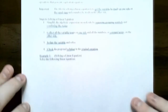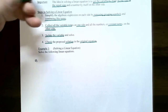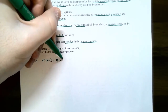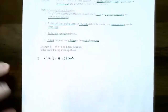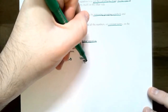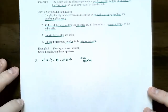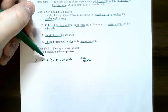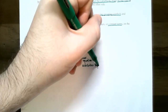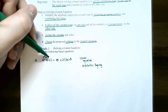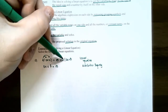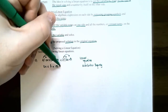Let's use these four steps on example one: solve the equation 4 times the quantity 2x plus 1 equals 29 plus 3 times the quantity 2x minus 5. Each variable is raised to the first power, so this is a linear equation. Step one — remove grouping symbols using the distributive property. Distribute the 4: four times 2x is 8x, four times 1 is 4, giving 8x plus 4 on the left. Distribute the 3: three times 2x is 6x, three times negative 5 is negative 15.